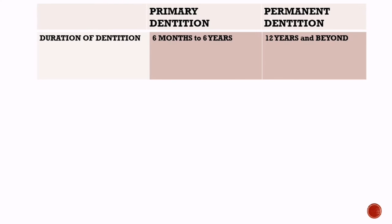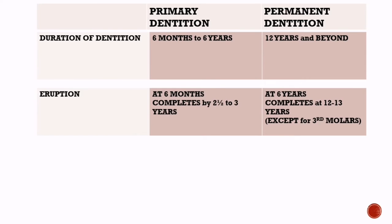Primary dentition period lasts from 6 months to 6 years, whereas permanent dentition period lasts from 12 years and beyond. Primary teeth begin to erupt at 6 months, and by 2 and a half to 3 years of age, a child would have his or her complete set of primary teeth. Eruption of permanent teeth begins at 6 years and completes at 12 to 13 years, except for third molars.